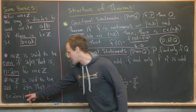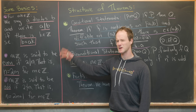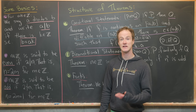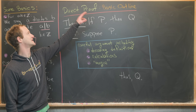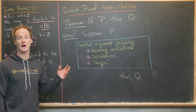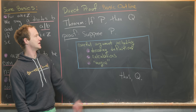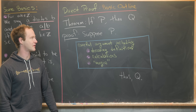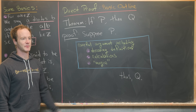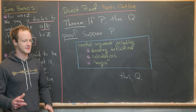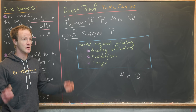N is odd if it is not divisible by two — written with a cross through the divisibility symbol — which means we can write N as 2M plus one for some integer M. Now that we have some basic tools at hand, let's look at a basic outline for a direct proof of a conditional statement. Suppose we have the theorem: if P, then Q, where P and Q are both mathematical statements.